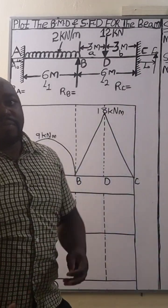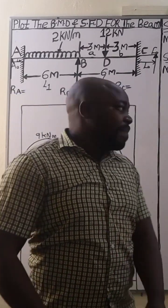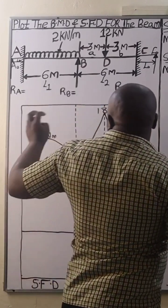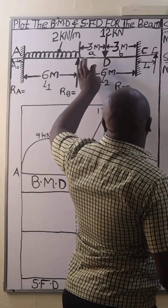So, for a fixed beam, you must extend an imaginary span. Now, we are going to have one, two, three, four.